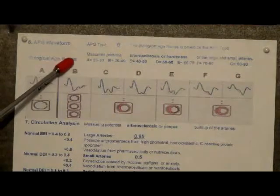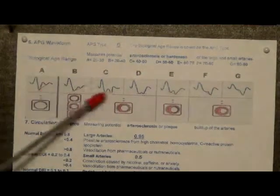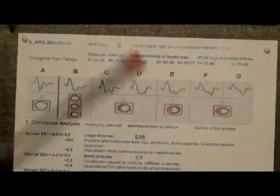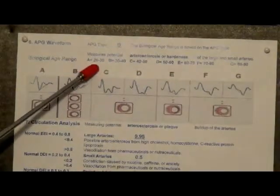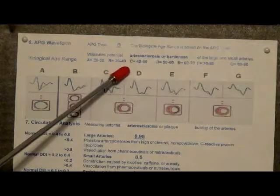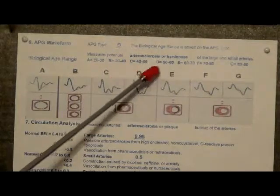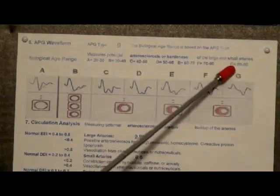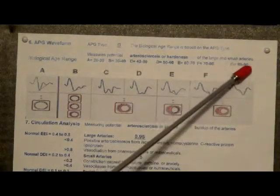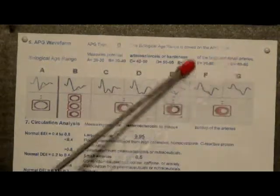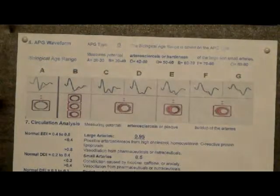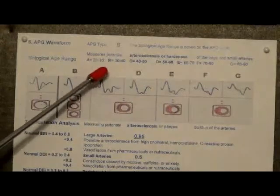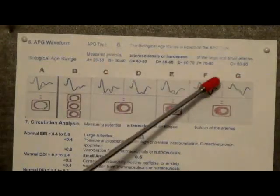Biological age is a calculated variable. This is another way of looking at it — the same thing we had before — but here we can see what age is represented by each type: A would be 20 to 30, B is 30 to 40, C is 40 to 50, D is 50 to 60, E is 60 to 70, F is 70 to 80, and G is 80 to 90. Now obviously if you're 30 and you're running an F or a G, it's really of great concern. If you're 80 and running an F or a G, it's still of concern — you'd like it to be down at a B or a C — but there's a reason for it and this can be corrected.